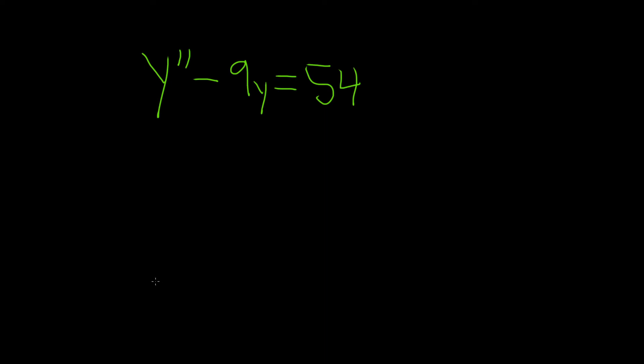In this problem, we're going to solve this differential equation using the annihilator method. So the first step will be to pretend that this differential equation is equal to 0. So we have y double prime minus 9y, and that's equal to 0.